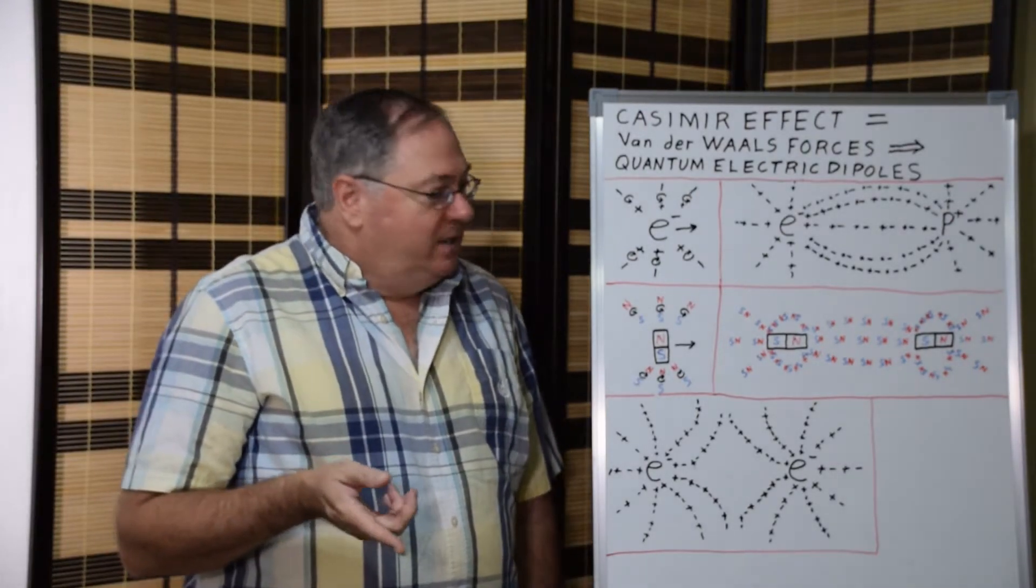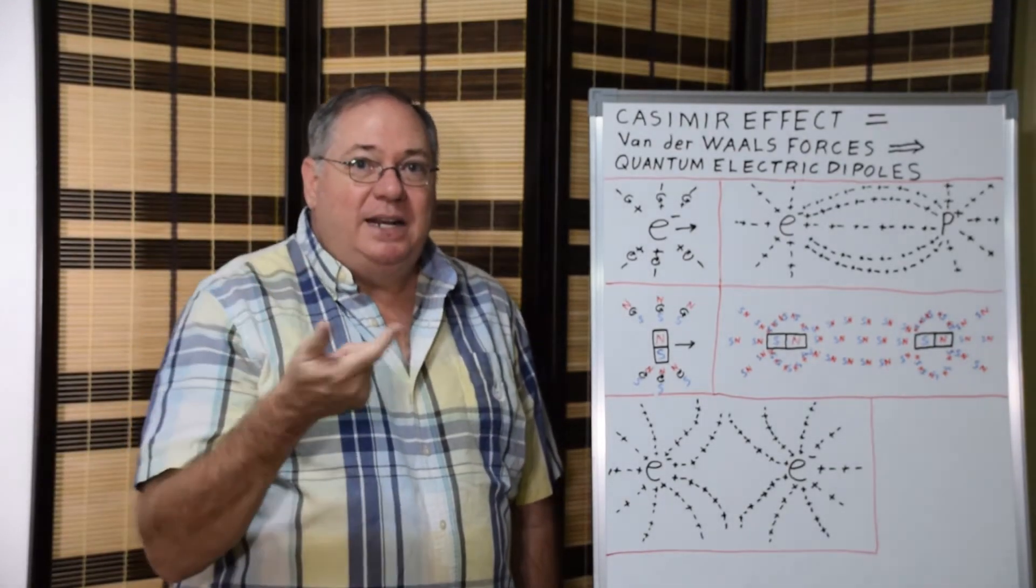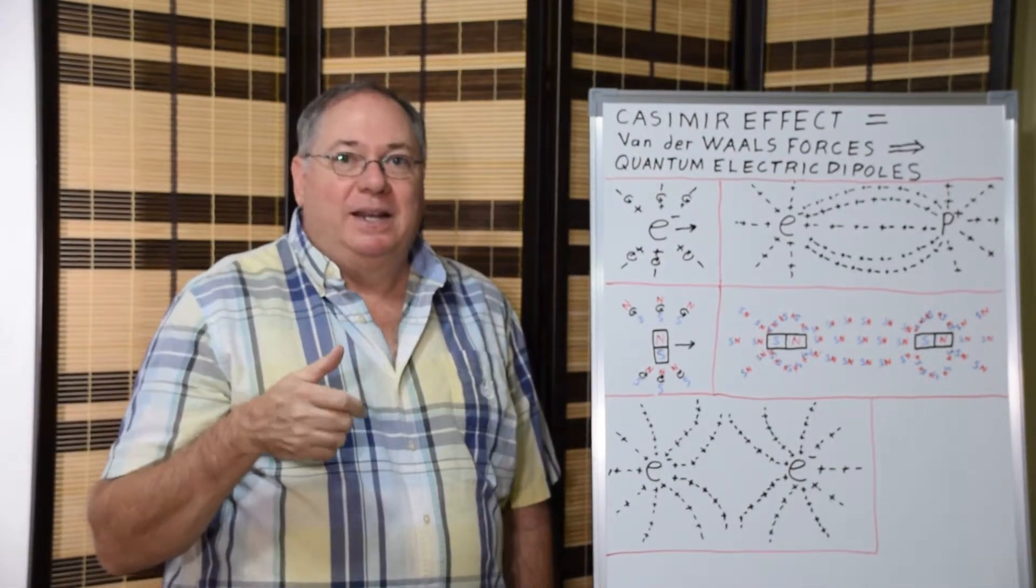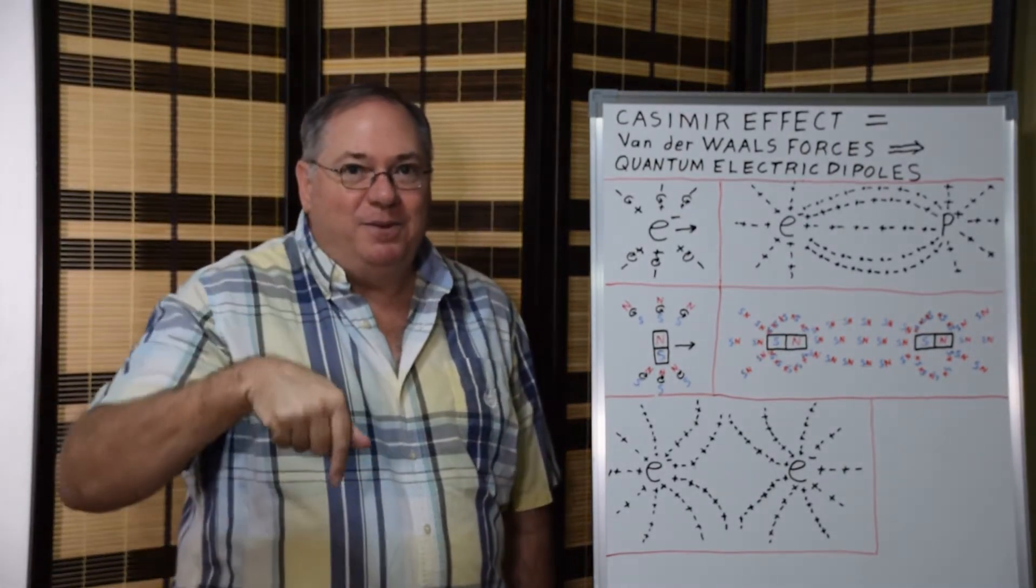And then with magnetic fields, as I said here, once you have a rotating dipole, a rotating dipole produces a magnet. If a dipole rotates this way, it produces a magnet with a north pole that way and a south pole the other way.